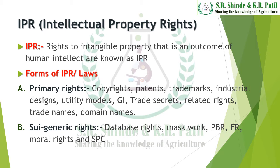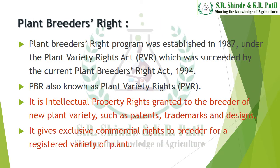The important type among these is PBR, which is relevant to the agriculture field. Plant Breeders Right program was established in 1987 under the Plant Variety Right Act, which was succeeded by the current Plant Breeders Right Act, 1994. PBR, also known as Plant Variety Rights, is an intellectual property right granted to the breeder of a new plant variety, similar to patents, trademarks and designs.